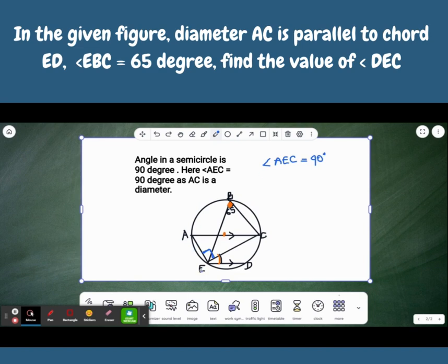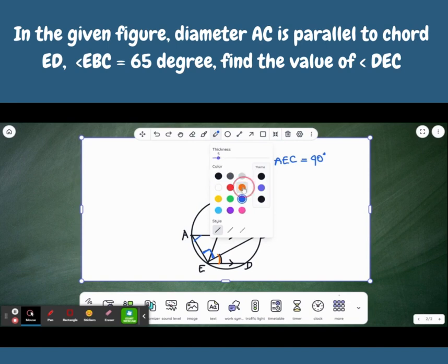Alright. Now, can we see another angle? Angle EAC, this angle. Check out the angle EAC here. I am highlighting it again with orange. Angle EAC. This angle should be equal to 65 degrees. Why do you think it should be equal to 65 degrees?